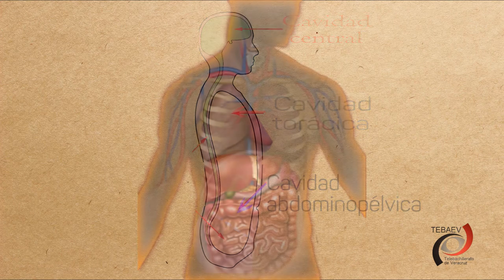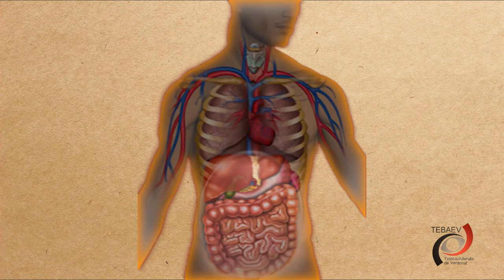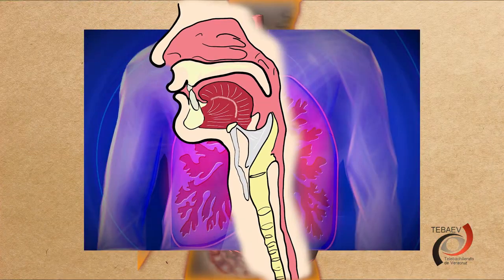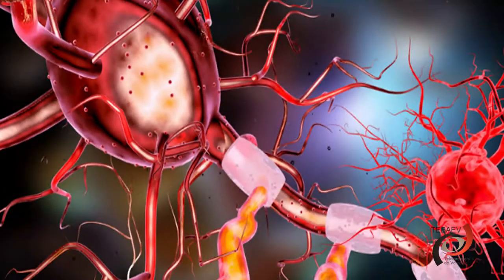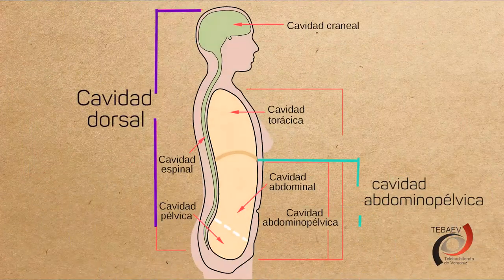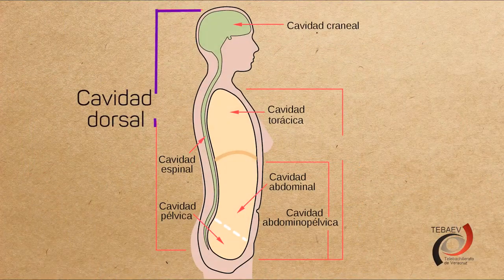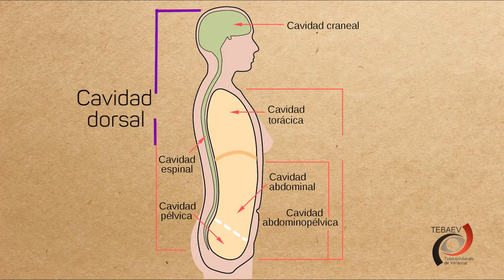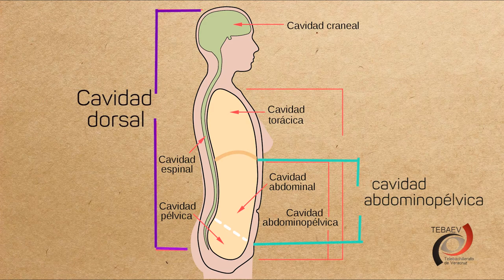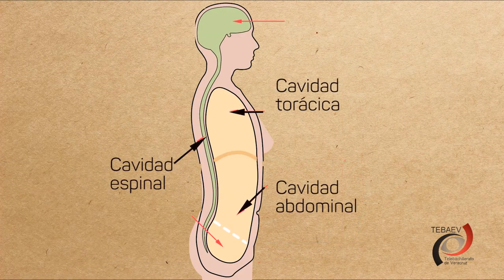El espacio superior o cavidad torácica contiene el corazón, los pulmones, la tráquea, el esófago, los vasos sanguíneos grandes y los nervios. En la parte inferior, la cavidad abdominopélvica puede dividirse a su vez en dos partes: la cavidad abdominal y la cavidad pélvica.